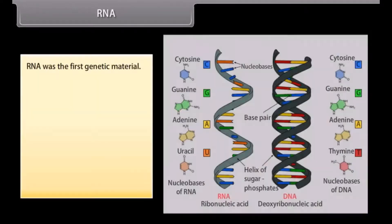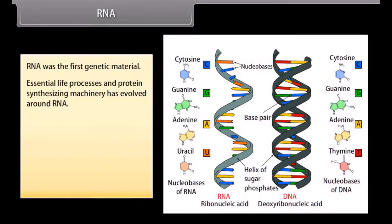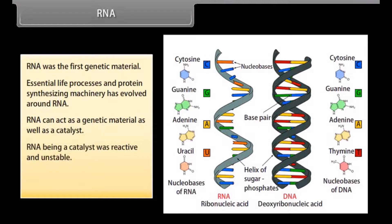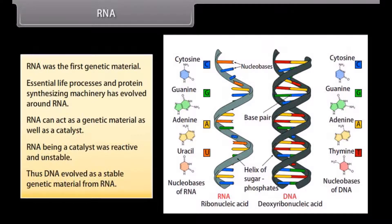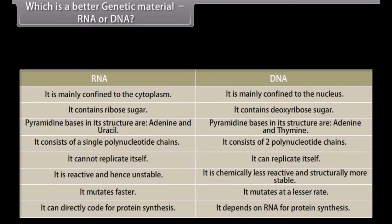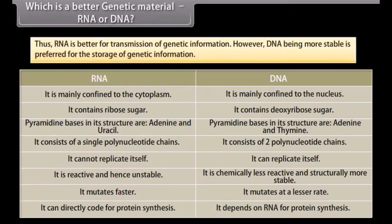RNA was the first genetic material. Essential life processes and protein-synthesizing machinery evolved around RNA. RNA can act as a genetic material as well as a catalyst. However, RNA, being a catalyst, was reactive and unstable — thus DNA evolved as a stable genetic material from RNA. While RNA is better for transmission of genetic information, DNA, being more stable, is preferred for the storage of genetic information.